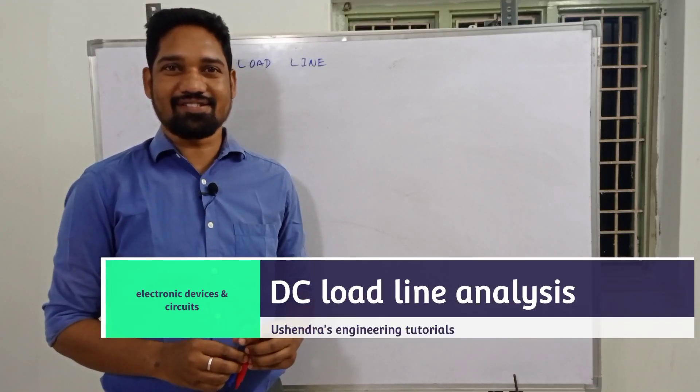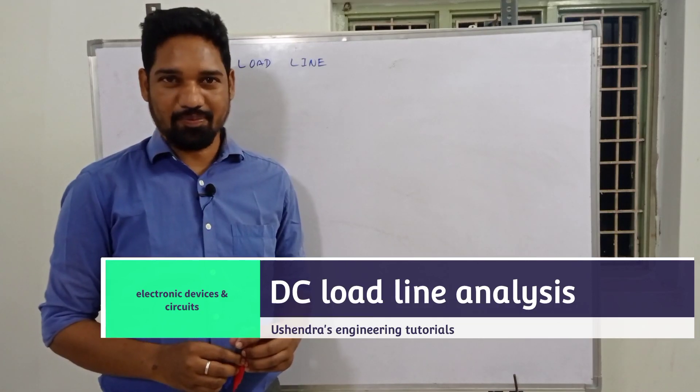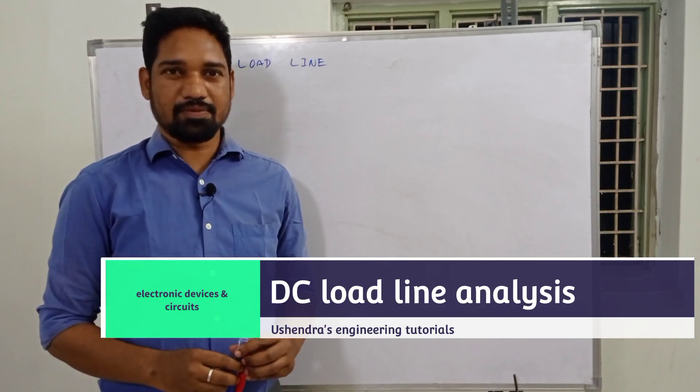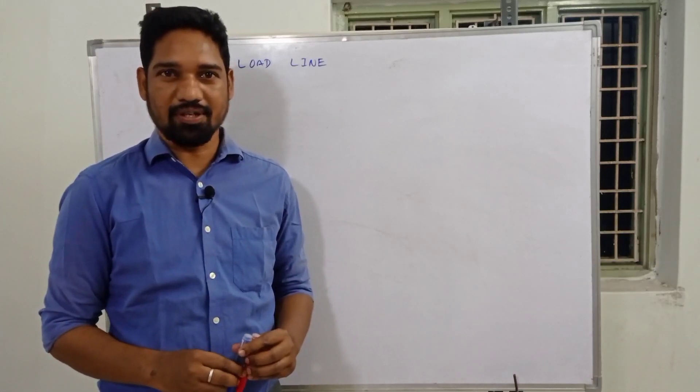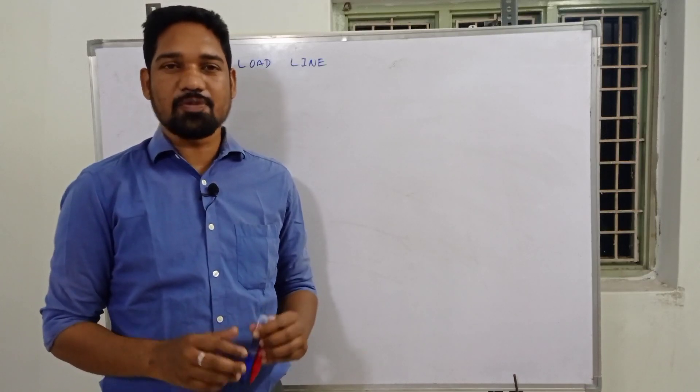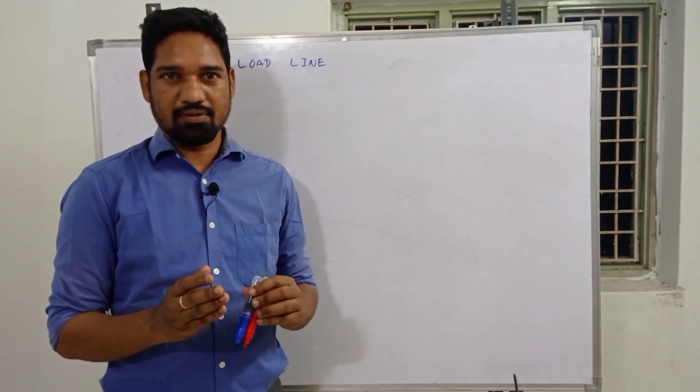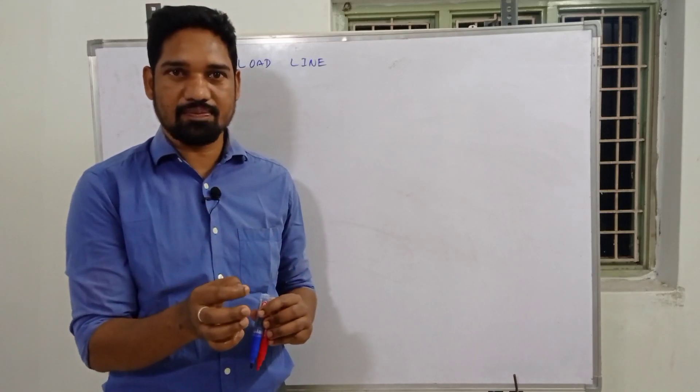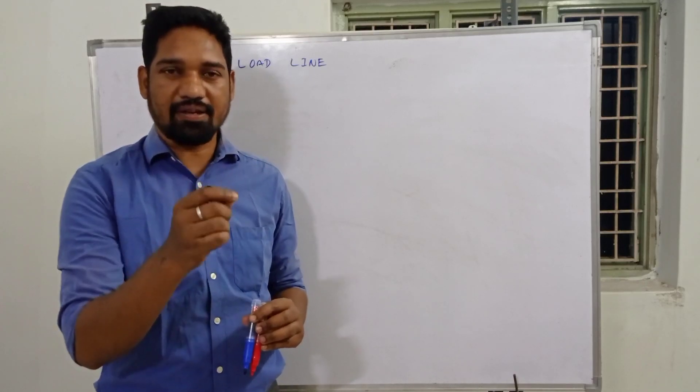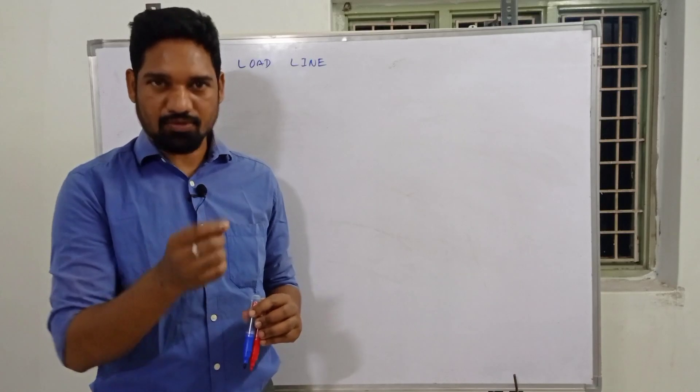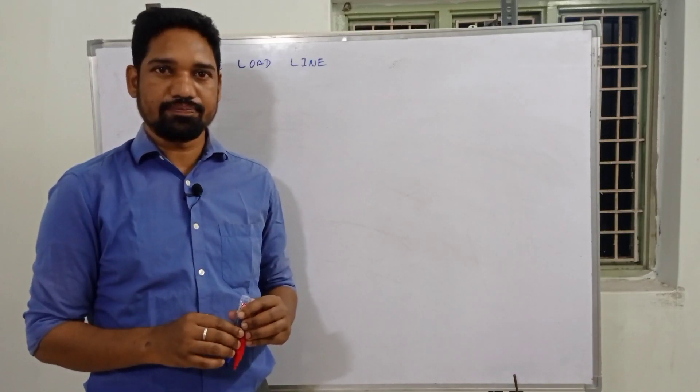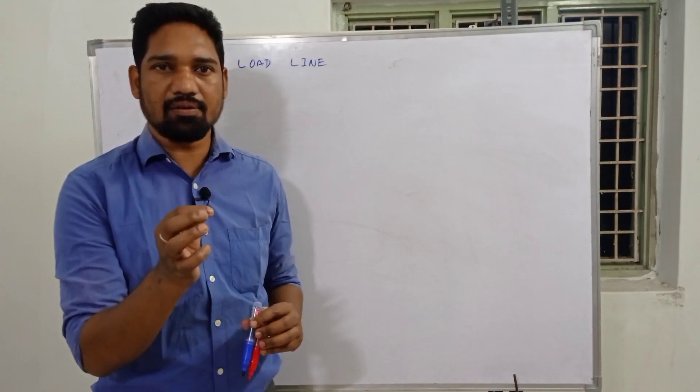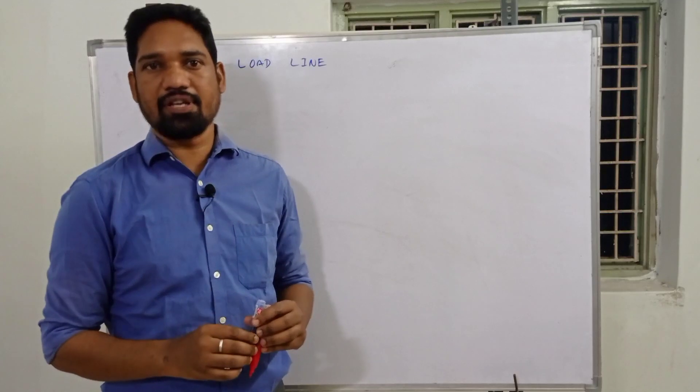Hi, welcome to Shendras Engineering Tutorials EDC course. Today's important topic is DC load line analysis and AC load line analysis. If you come across a question about biasing and DC load line, you should start from the basic biasing arrangements like fixed bias, then modifications like collector to base bias, emitter feedback resistance, and finally self-bias or voltage divider bias.